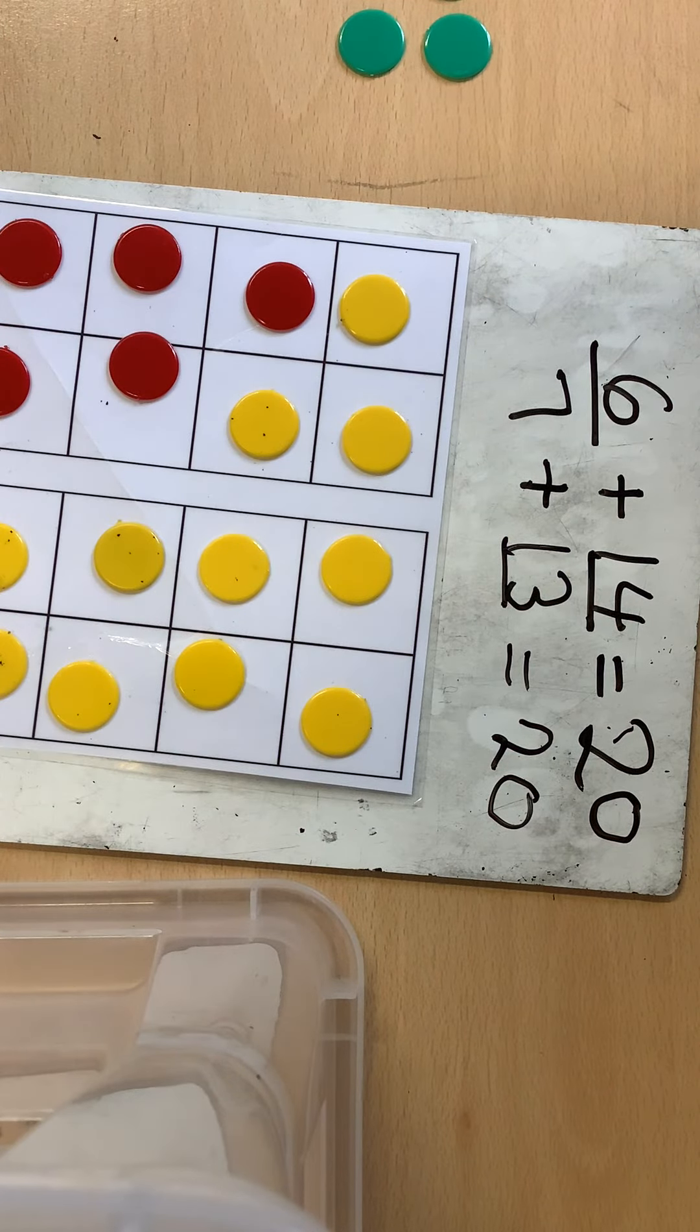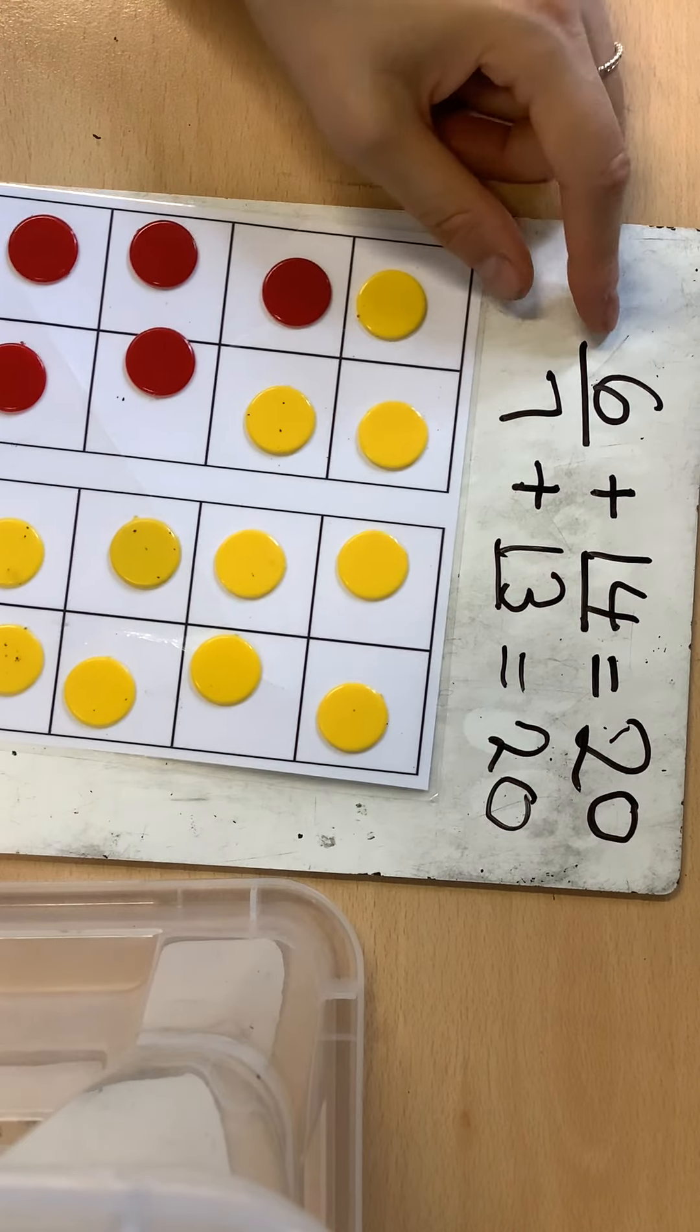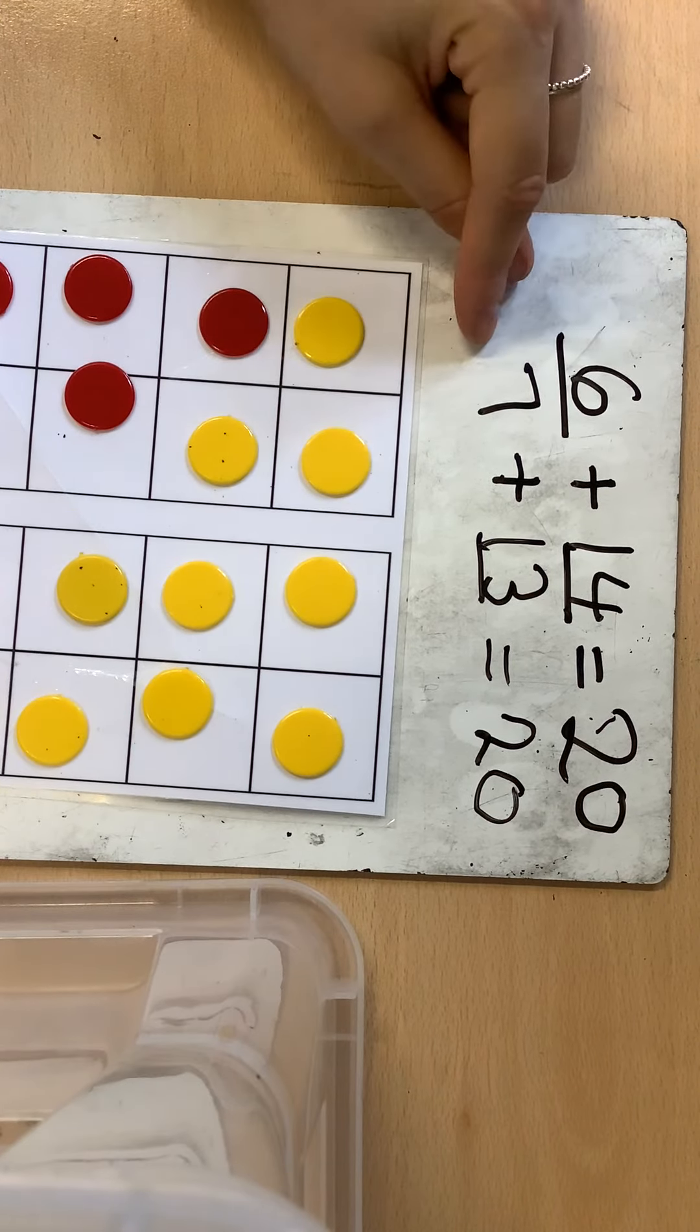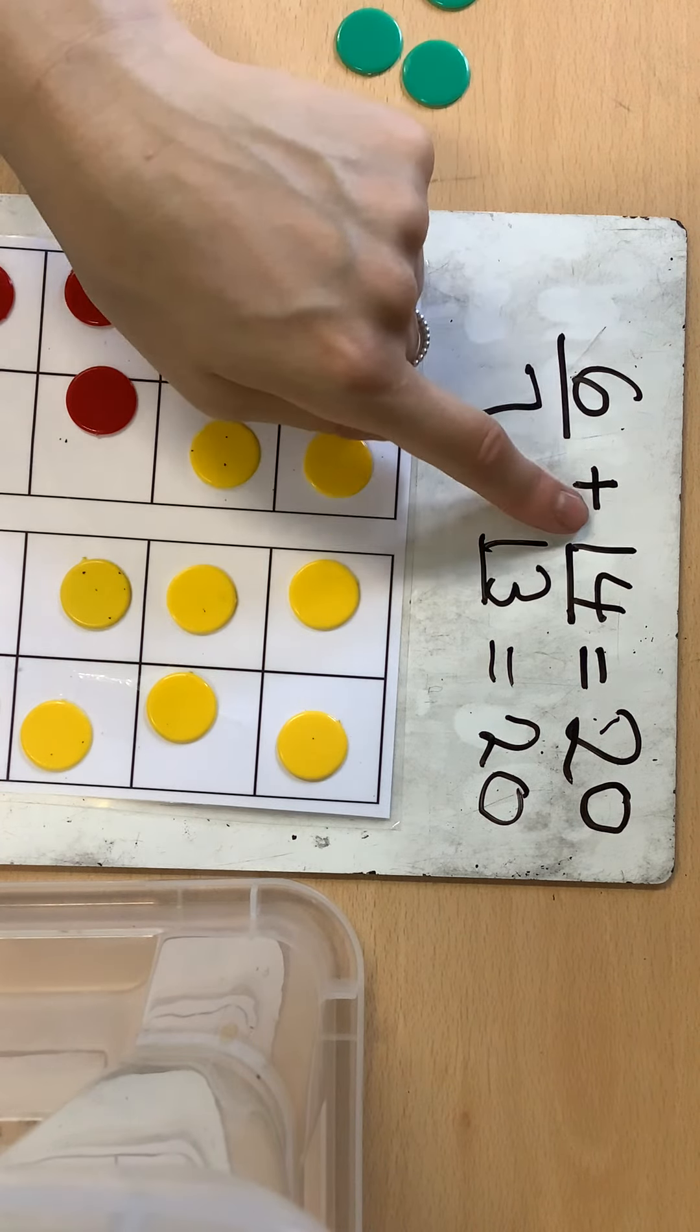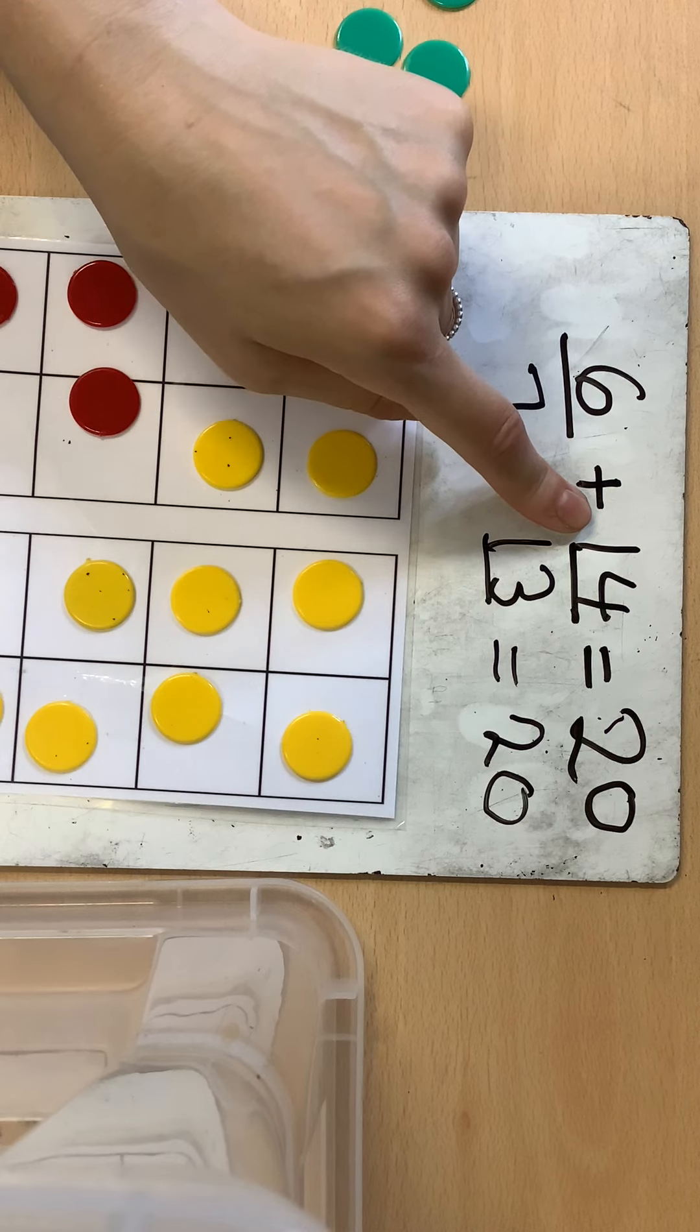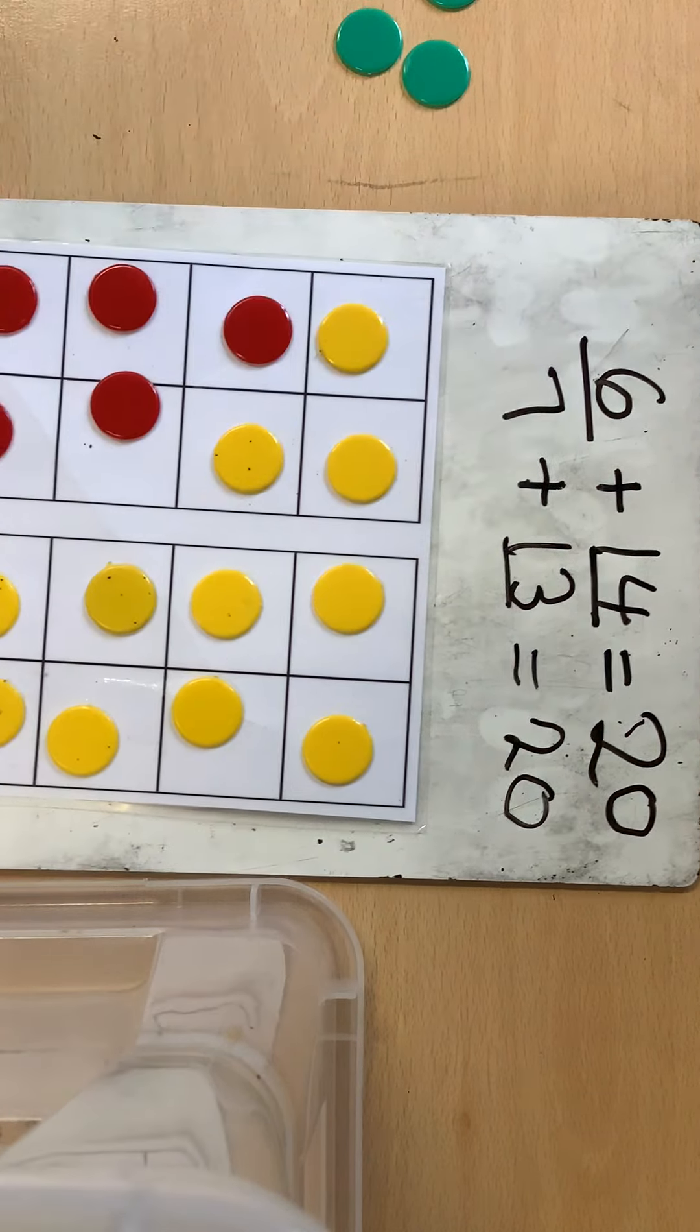What other numbers can make 20? Can you spot a pattern? This is six, this is seven. When this number went up the number bond that you add it to goes... Have a think.